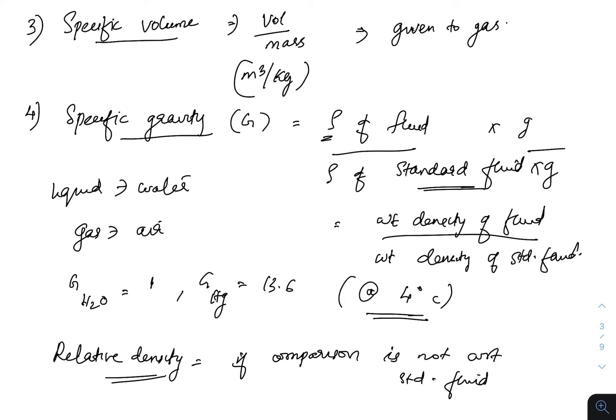The next one is specific volume. Specific volume is volume per unit mass — the volume occupied by a given mass. This concept is mainly concerned with gases, because for a given mass, gas can occupy different volumes. So specific volume is always given for gases, since gases take different volumes for a given mass quantity.